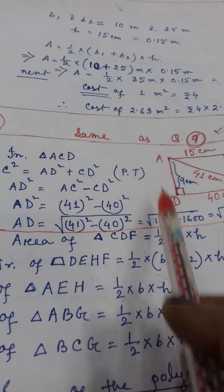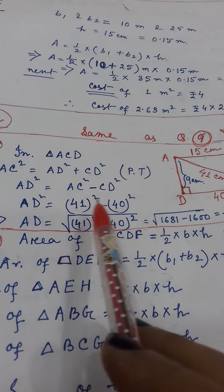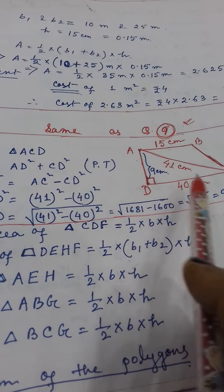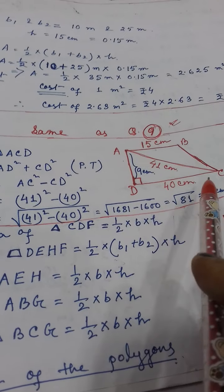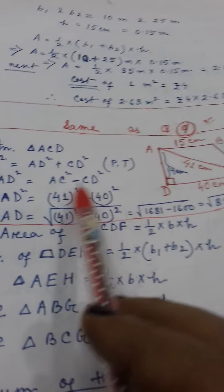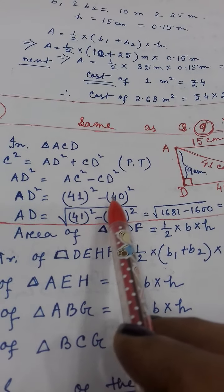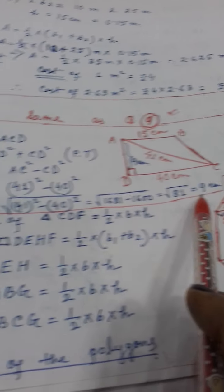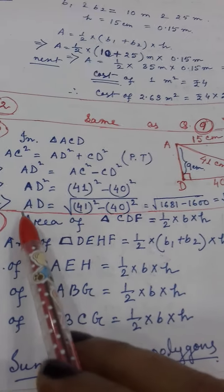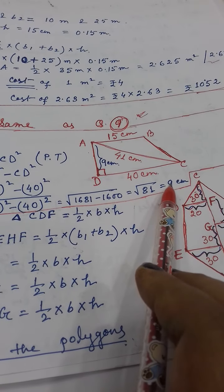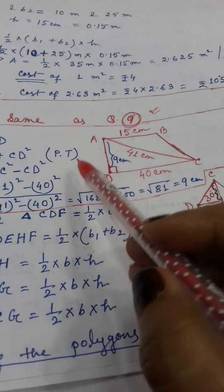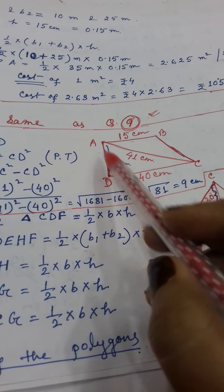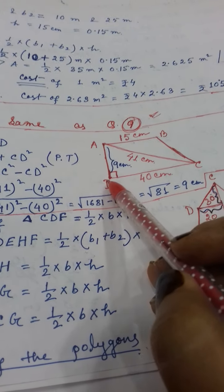From there you have to find out AD. AC value is given to you, CD value is given to you — place the values. AD has come out to 9 cm. So you have got AD as 9 cm, meaning the height is 9 cm.